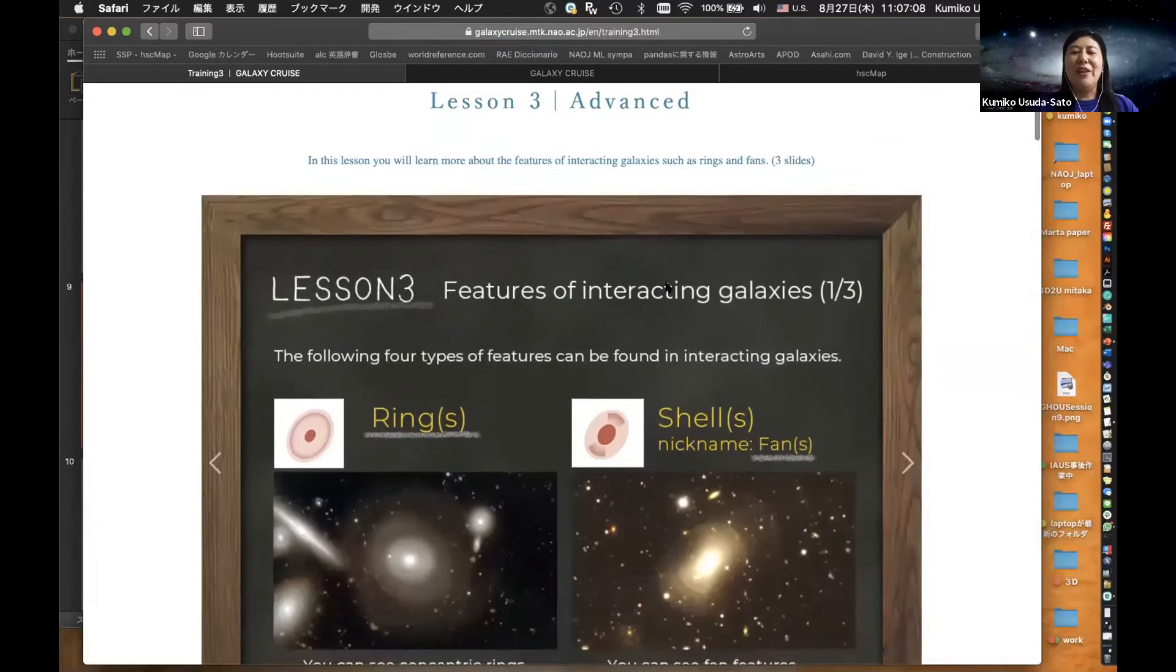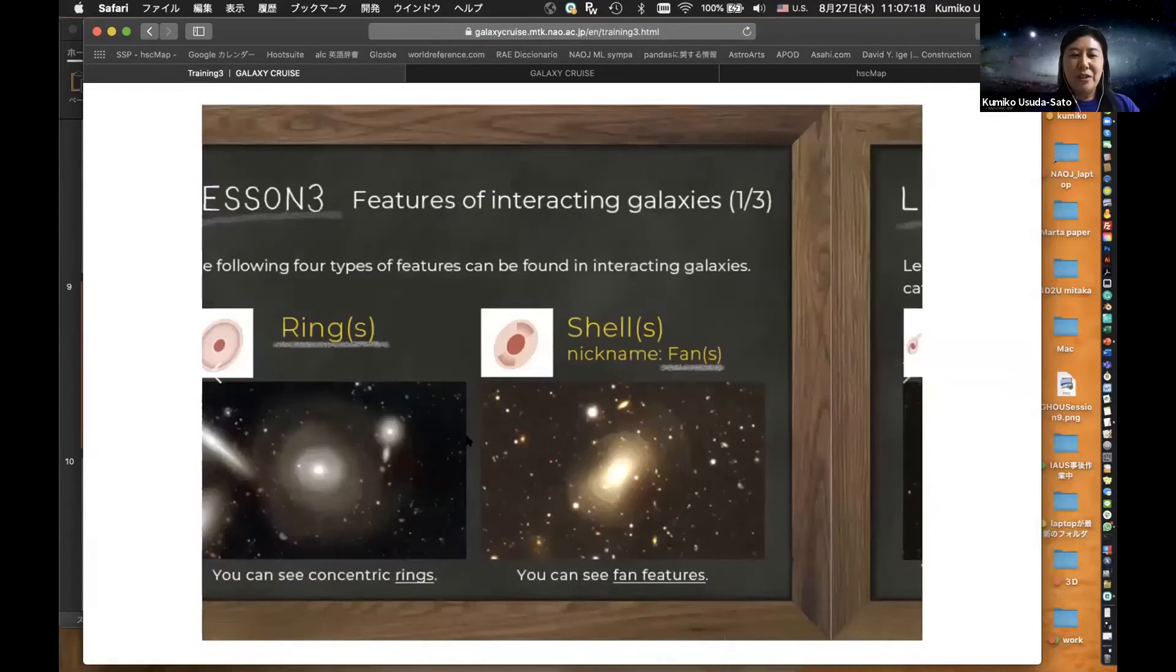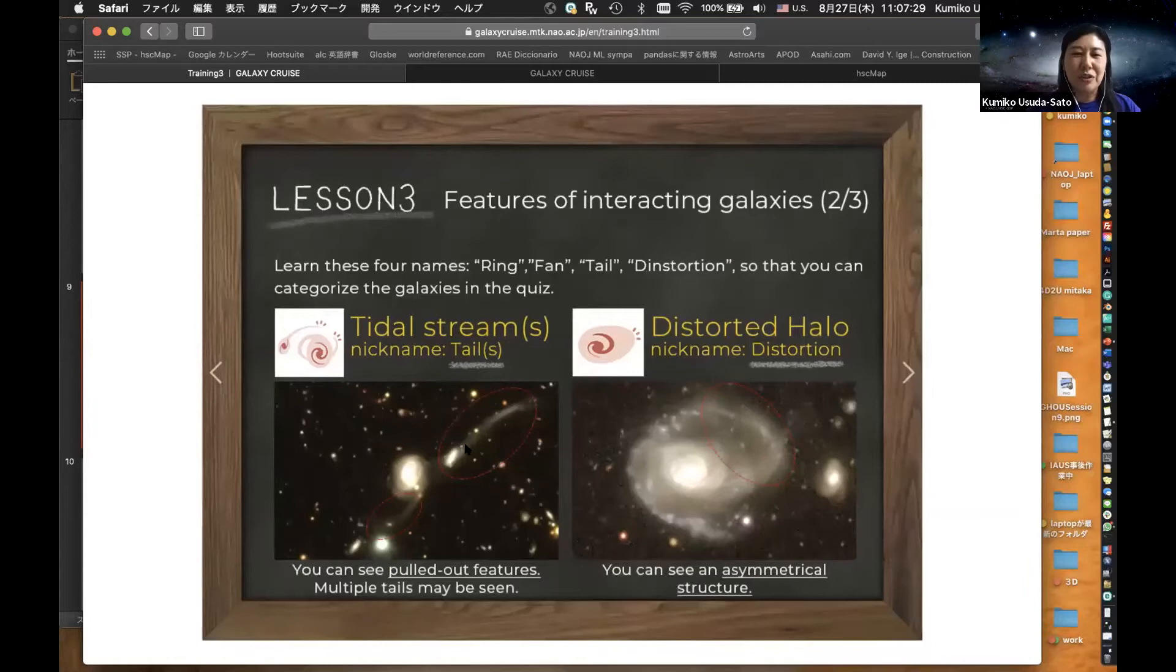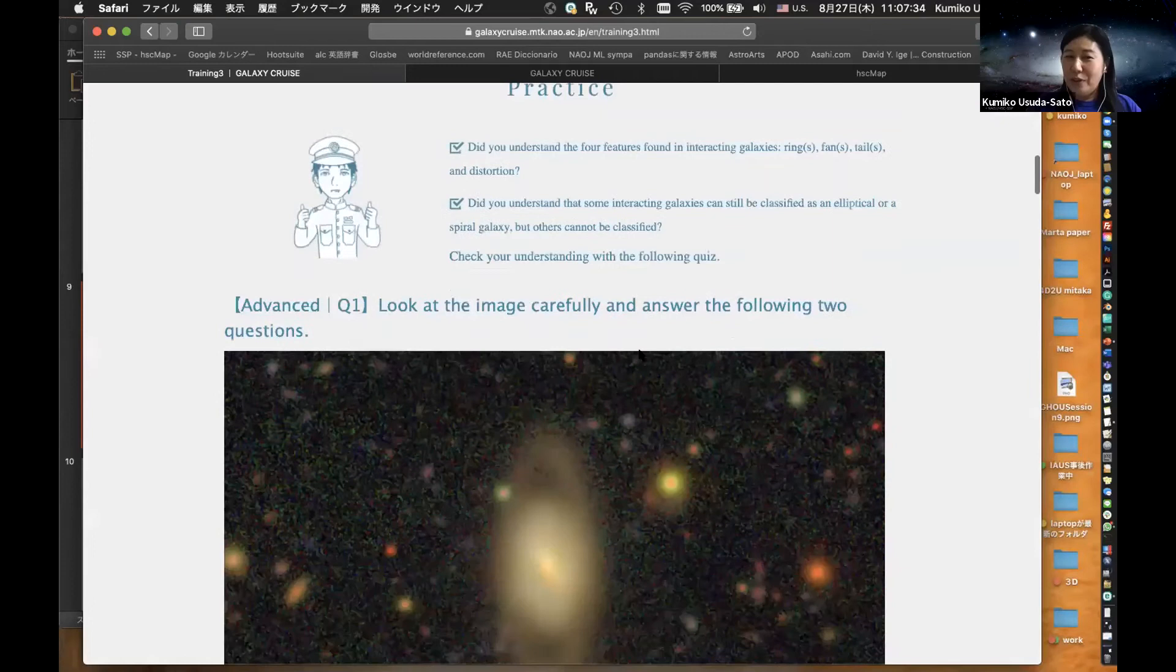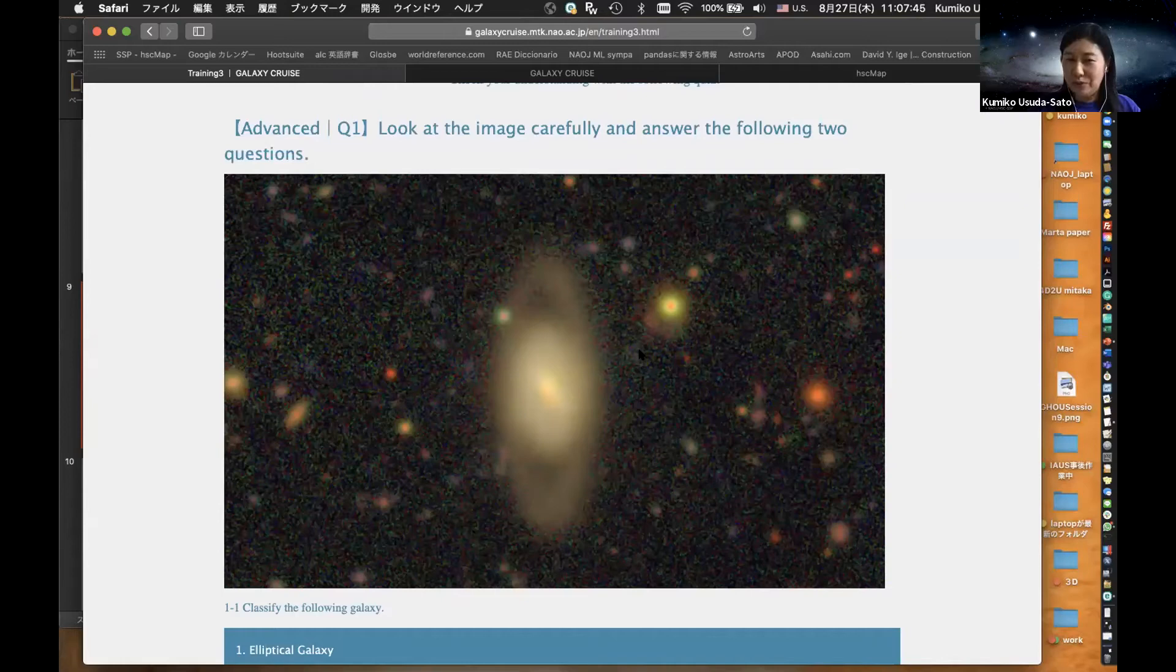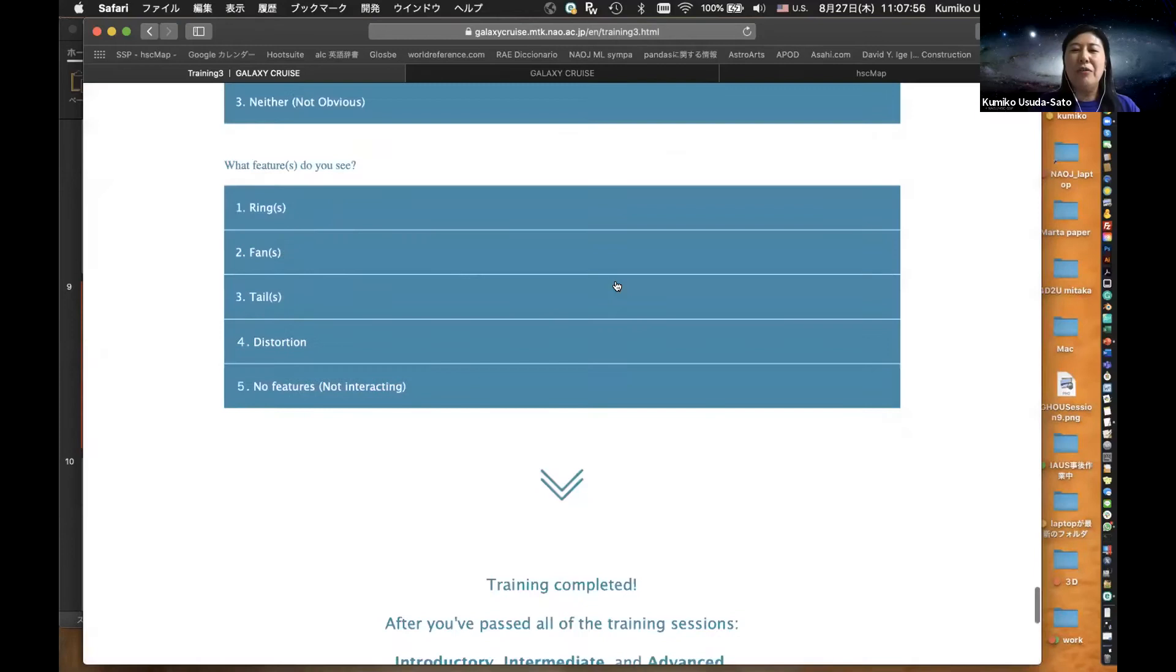After you answer all five questions, please click lesson three. This is the final lesson, a little bit challenging, but do not worry, you can do it. In lesson three, you will learn four main features of interacting galaxies: number one, rings—you see concentric rings; fans—fan-shaped structures; three, tails—tail-like structures; and distortion. We have another five questions. This is an interacting galaxy. Which feature do you see: ring, fan, tail, or distortion? The answer is ring—you can see a ring feature over here.